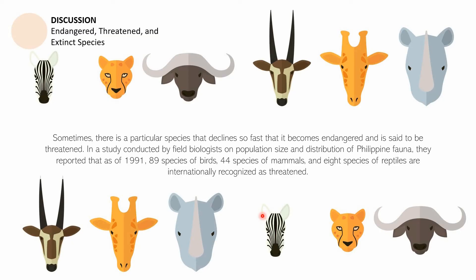Sometimes a species declines so fast it becomes endangered and is said to be threatened. In a study by field biologists on Philippine fauna, as of 1991, 89 species of birds, 44 species of mammals, and 8 species of reptiles were internationally recognized as threatened. A species is threatened when its population drops drastically and quickly, whereas endangered refers to a more gradual decline.